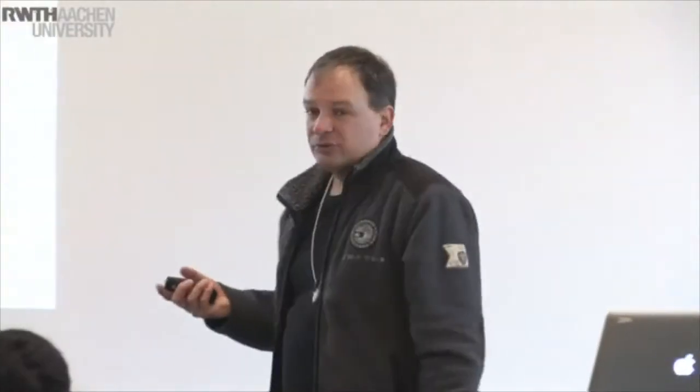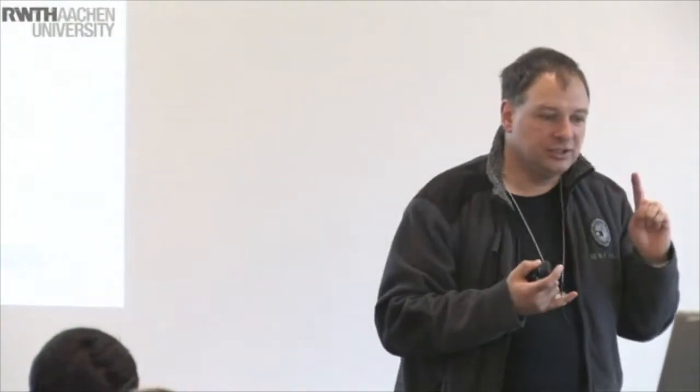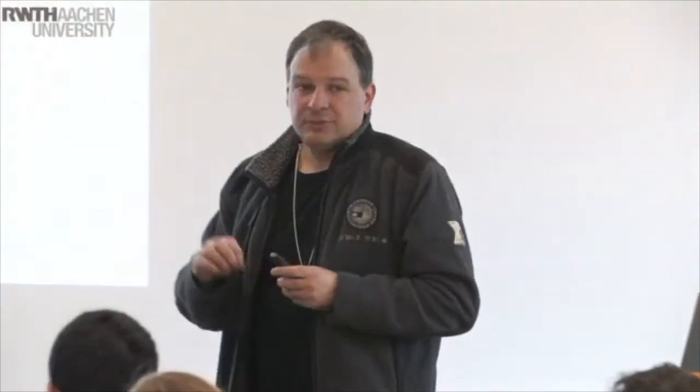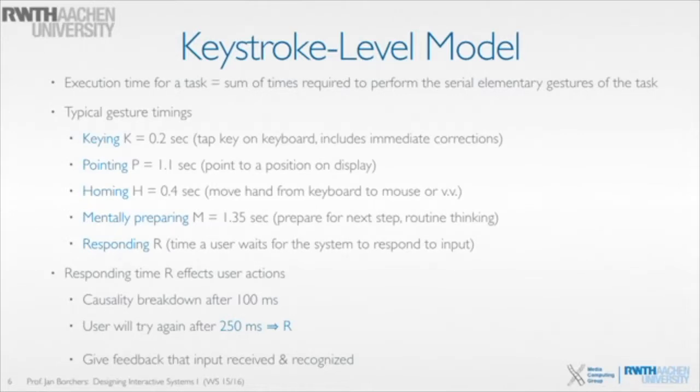What it does is give you the execution time for a task by taking the sum of the times that the various elementary operations will take. These elementary operations, which are the operators in the GOMS model, have been measured. From looking at a lot of people using computers in a variety of settings, applications, and hardware variants, these averages have been determined for these operators.